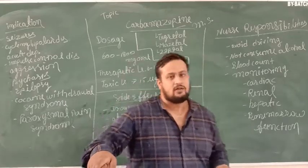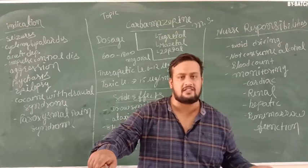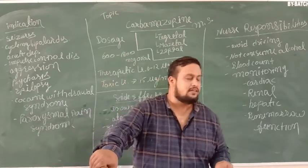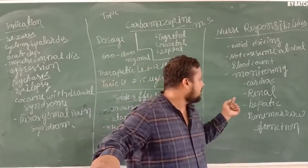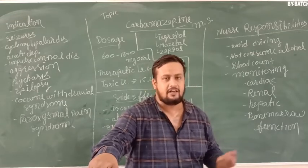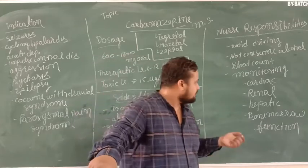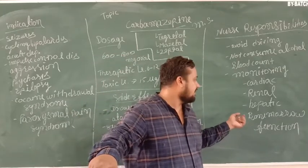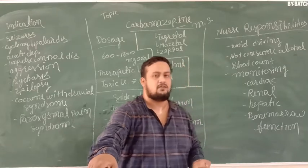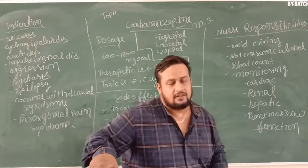Then blood counts regularly. RBC, WBC, Hemoglobin, TC, DC. All of these regularly monitor. ECG monitor. Then monitoring cardiac, cardiac monitoring by the ECG. Then renal monitoring. If you have bone marrow depression or not, these are the bone marrow functions.